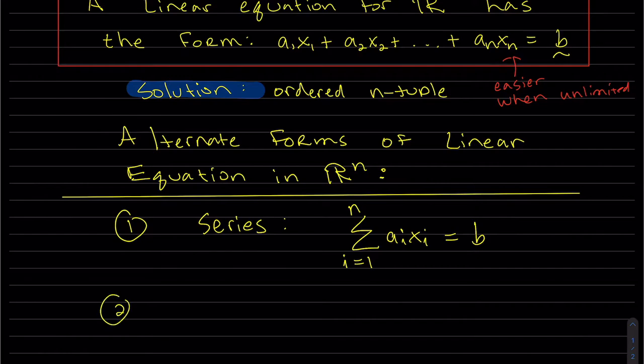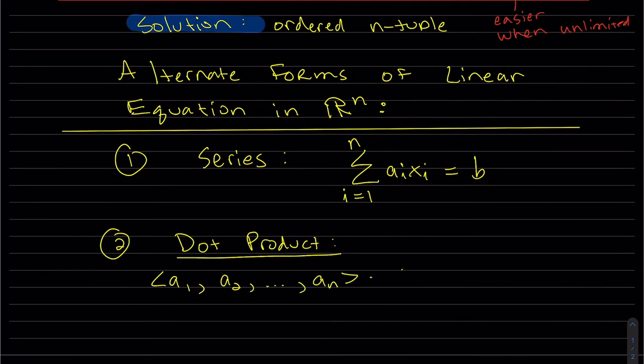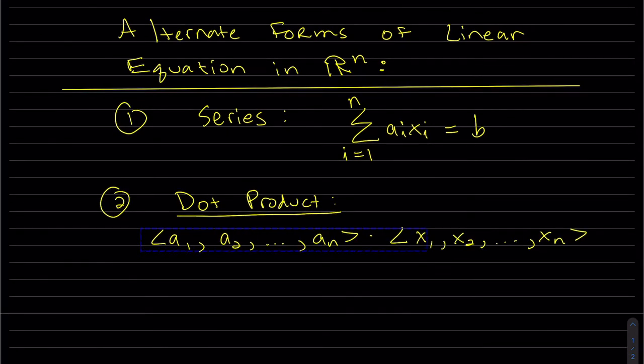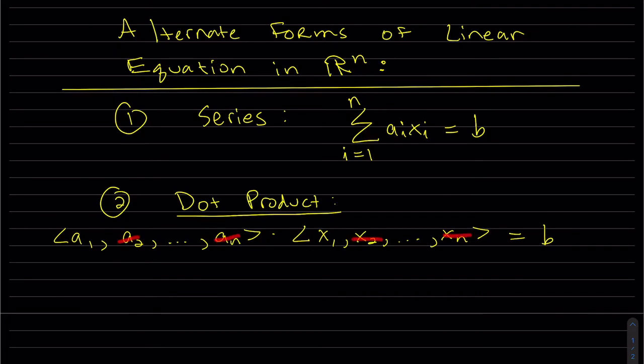Our second form is a dot product of vectors. And let's scoot that over. So that's my left side. And that's equal to b. So remember the dot product, it's this first one times this first one plus the second one times the second one. And they've got to be the same number all the way to aₙ times xₙ.